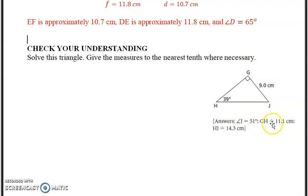Then there's a check your understanding that goes right along with that, and there are the answers provided. There's angle J, line GH or lowercase j, and line HJ or lowercase g, the hypotenuse. So now we're going to do example 3.